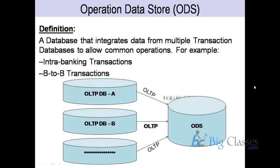Regarding tracking historical data in ODS: in ODS we generally keep not only one year of data but two or three times more data from the past. So if your OLTP system is keeping one financial year of data, in ODS we try to keep two or three financial years of data.